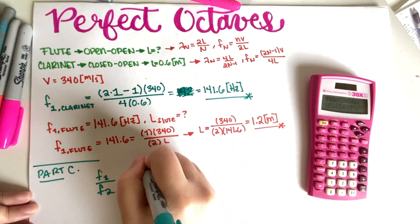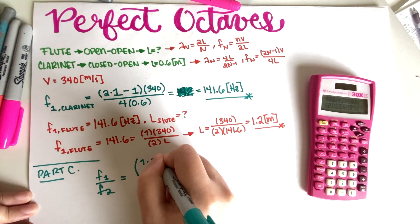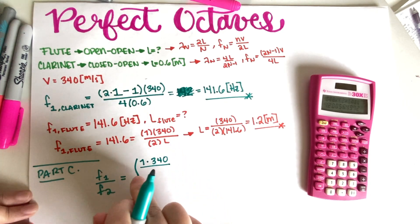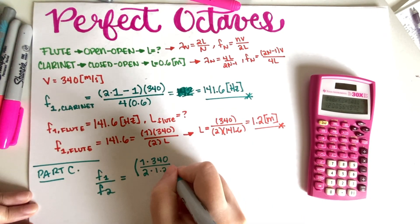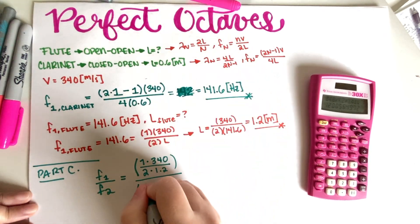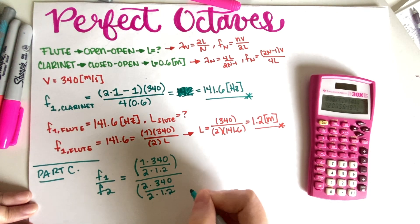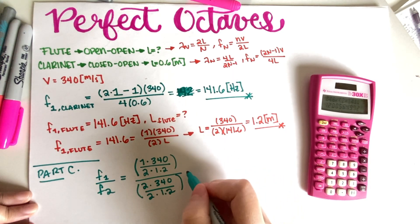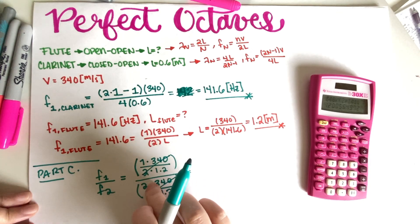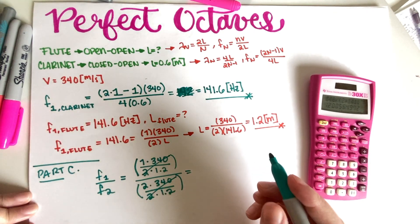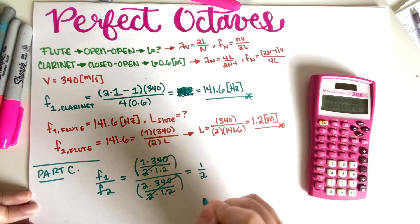Now over here this is 1 times velocity which is 340, and then this is 2 times L for the flute, and we said the flute was 1.2. And then the second one is just 2 times everything else, like this. So basically what we have is all of this chunk cancels out pretty much, and then we have like 1 over 2, so this is just one half, final answer for the flute.